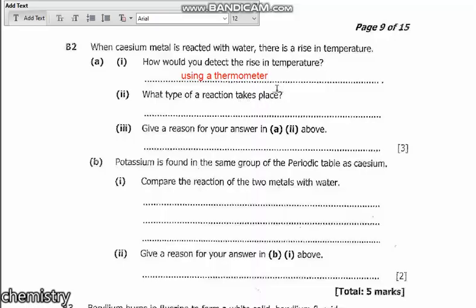What type of reaction takes place? Now remember there's a rising temperature. We have two types of reactions: endothermic and exothermic. So for a rising temperature, that means there's a loss of heat to the surrounding. Therefore, that's an exothermic reaction. Exothermic reaction involves the loss of heat to the surrounding.